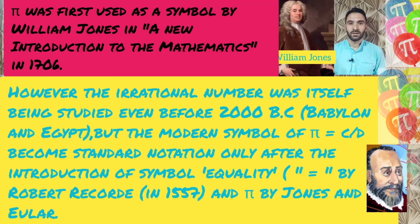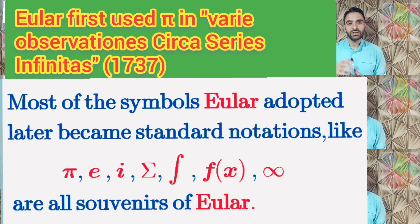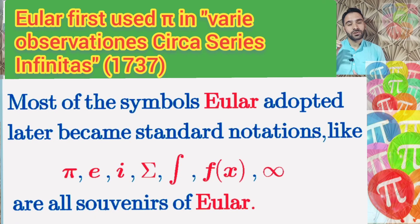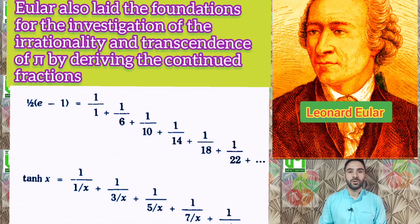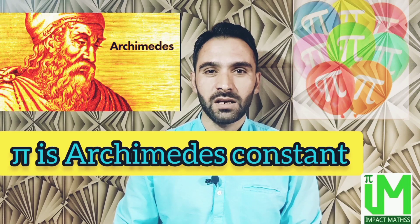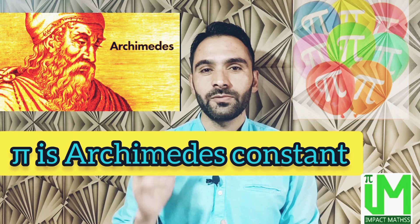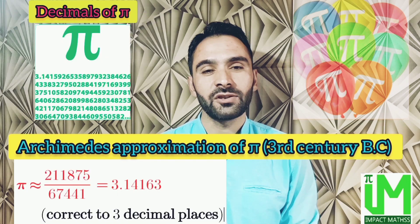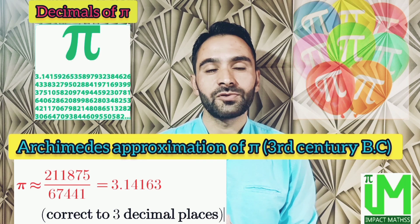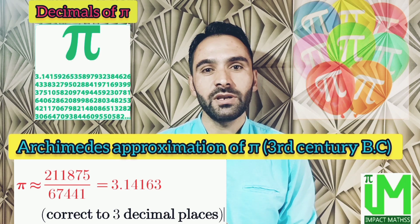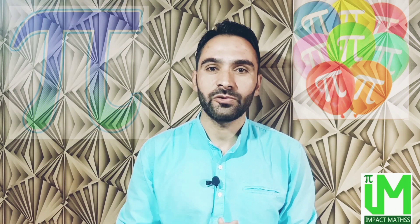The symbol pi was devised by British mathematician William Jones in 1706, but it was later adopted and popularized by Swiss mathematician Leonhard Euler. Pi is also called the Archimedes constant, as Archimedes was the first mathematician to give a method for calculating the decimals of pi to any desired degree of accuracy.